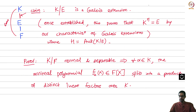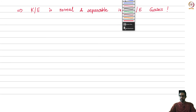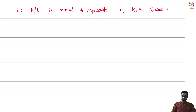Notice how we used all the various characterizations of Galois extensions here. To prove that the maps between script F and script G are inverses, we used the fixed-field characterization; but to show k over E is Galois when k over f is Galois, it was more convenient to use the definition in terms of normality and separability. That establishes one of the two compositions is the identity.